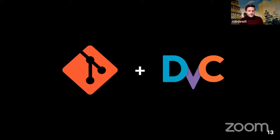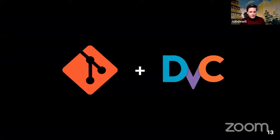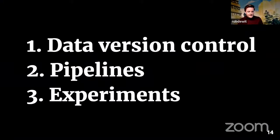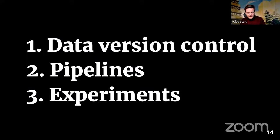If we've got Git for text-based files, what can we use for large files? That's where DVC comes in. Originally it started out as data version control. What it does is tie the versioning of your files — your datasets and your models — to your Git commit history. It has three main features we'll briefly discuss: data version control, pipelines, and experiments. It helps to understand how data version control works before we dive into pipelines and experiments.